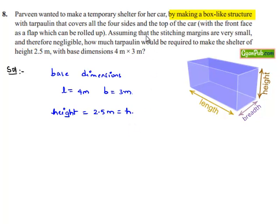Now, as the structure formed by the shelter is a cuboid or box-like structure with four sides covered and the top of the car covered.